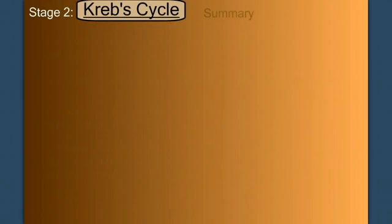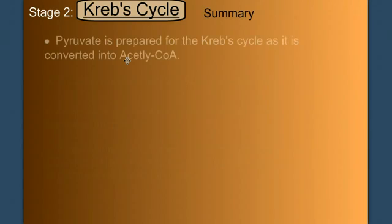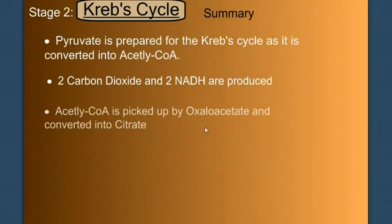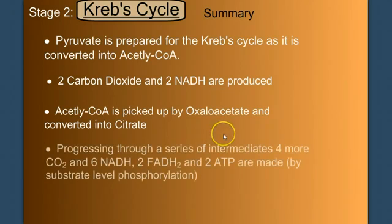So all we have left to do is summarize and give an accounting. So the Krebs cycle. Pyruvate is prepared for the Krebs cycle as it's converted to acetyl-CoA. Two carbon dioxide and two NADH are produced in this prep step. The acetyl-CoA is picked up by oxaloacetate and converted to citrate. And then progressing through a series of intermediates, four more carbon dioxides, six NADH, and two FADH2s, and two ATP are made, ATP made by substrate level phosphorylation.